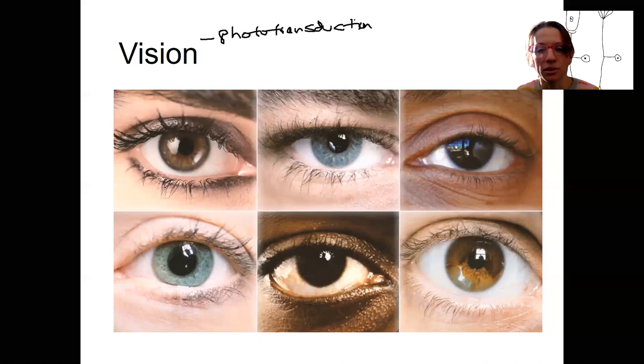So we're going to talk a little bit about some of the other structures. Some of the external structures I'm not going to go over. Some of these you know already, even things like eyelashes, eyebrows, which are important for keeping things out of the eye to keep our eye functioning well.